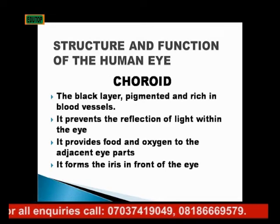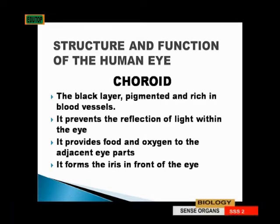The choroid is the black layer — that black part in your eye. It is pigmented and rich in blood vessels. It prevents reflection of light within the eye, so when light enters your eye there is no reflection. The choroid is black-colored and thus prevents reflection.